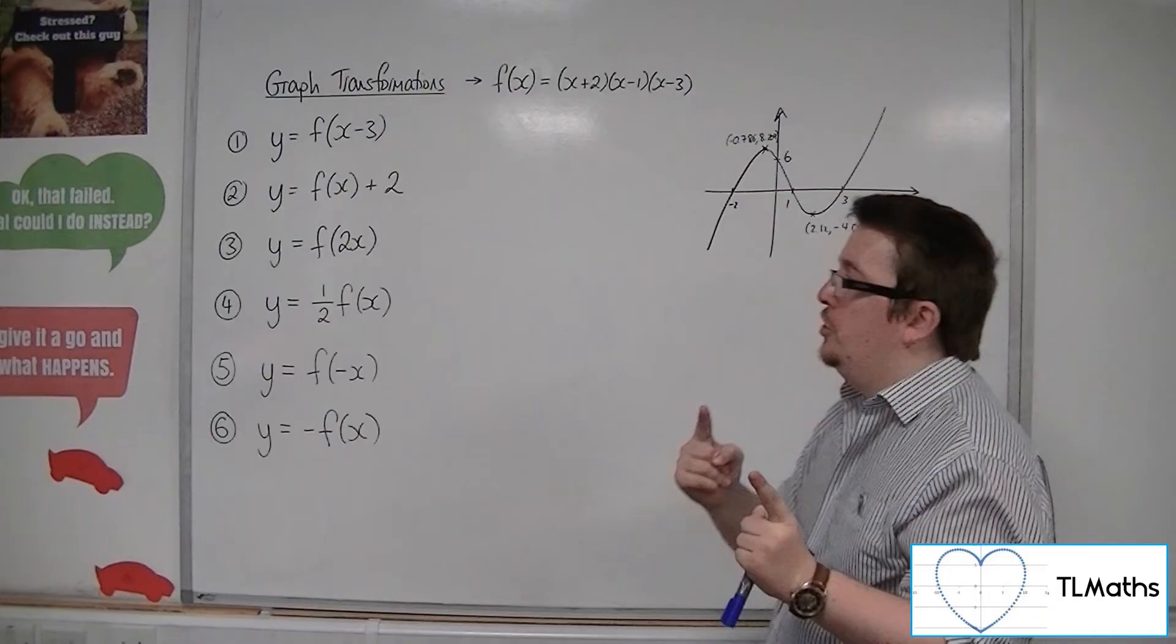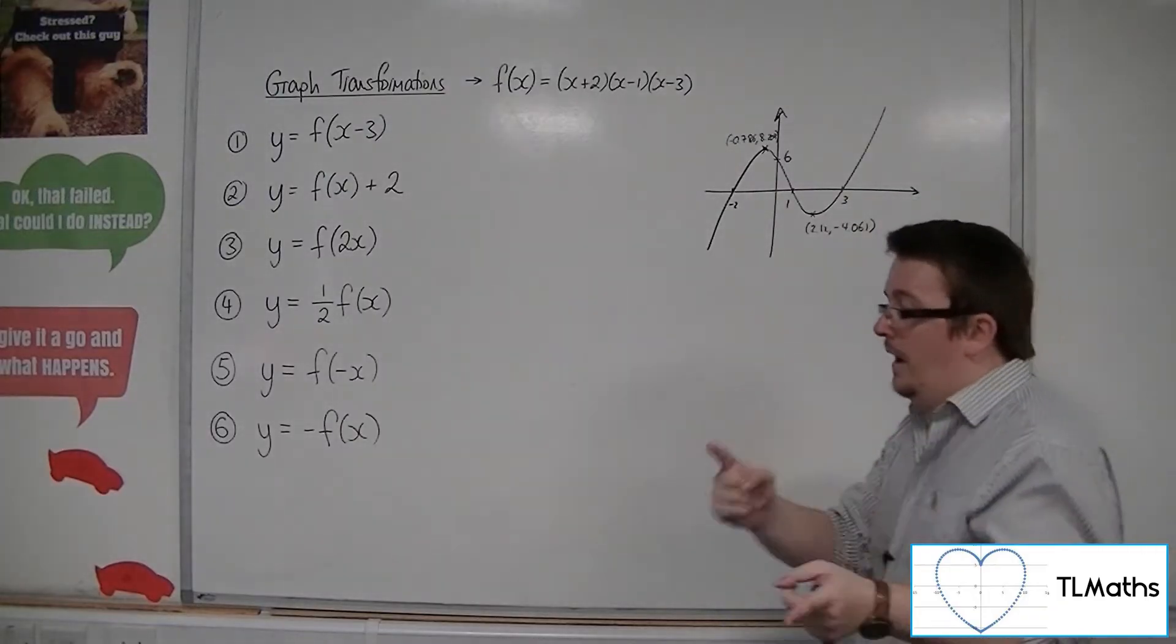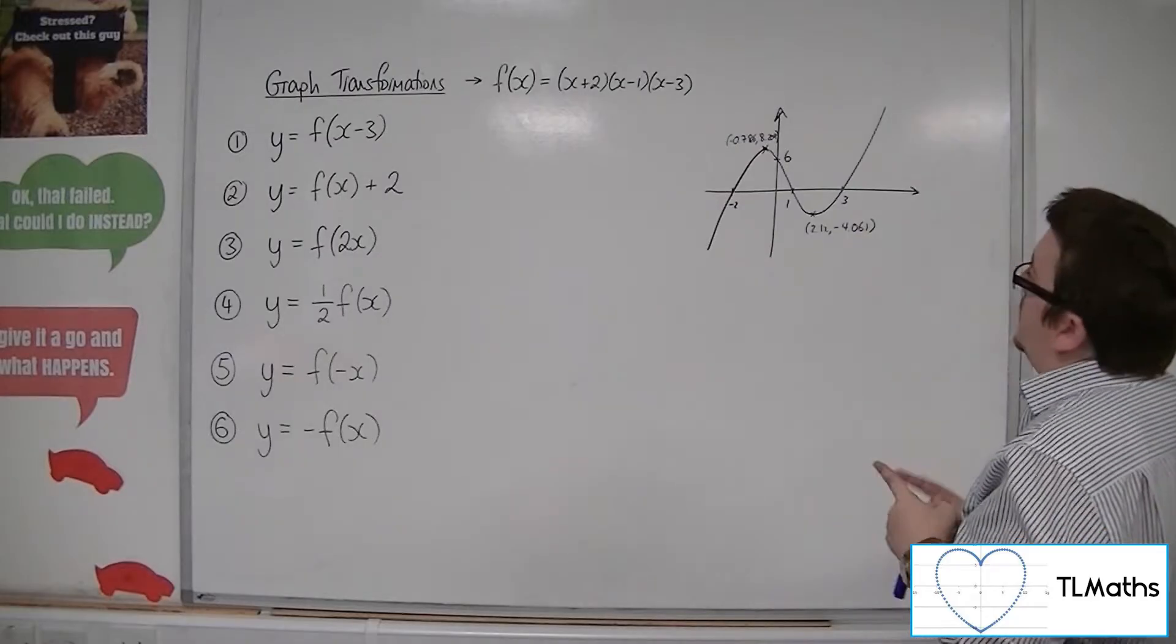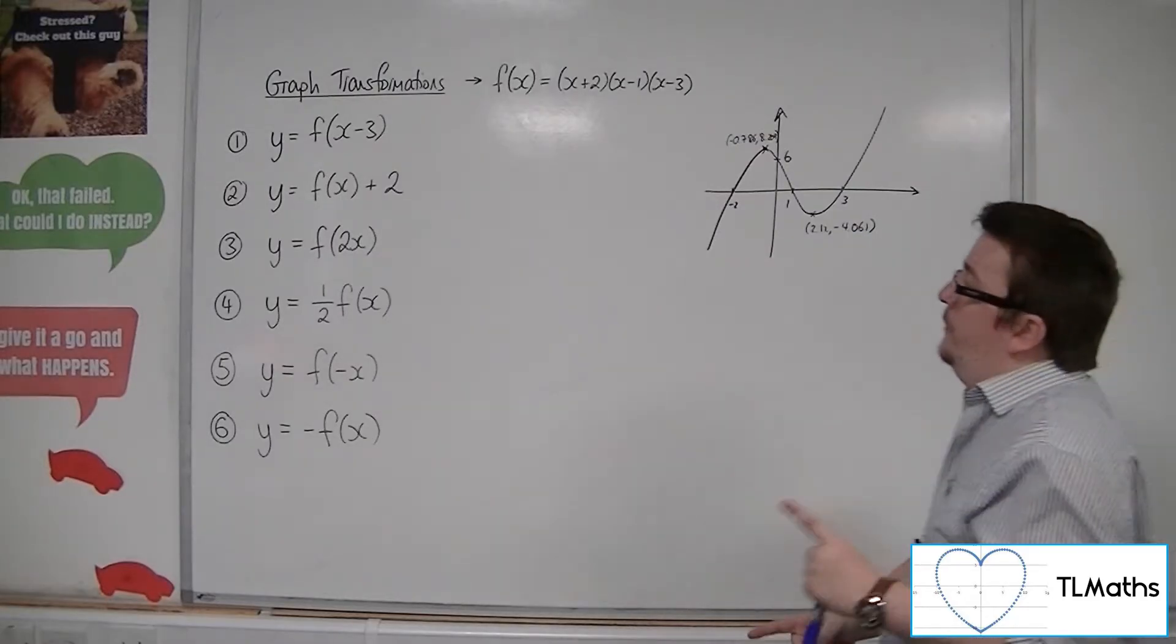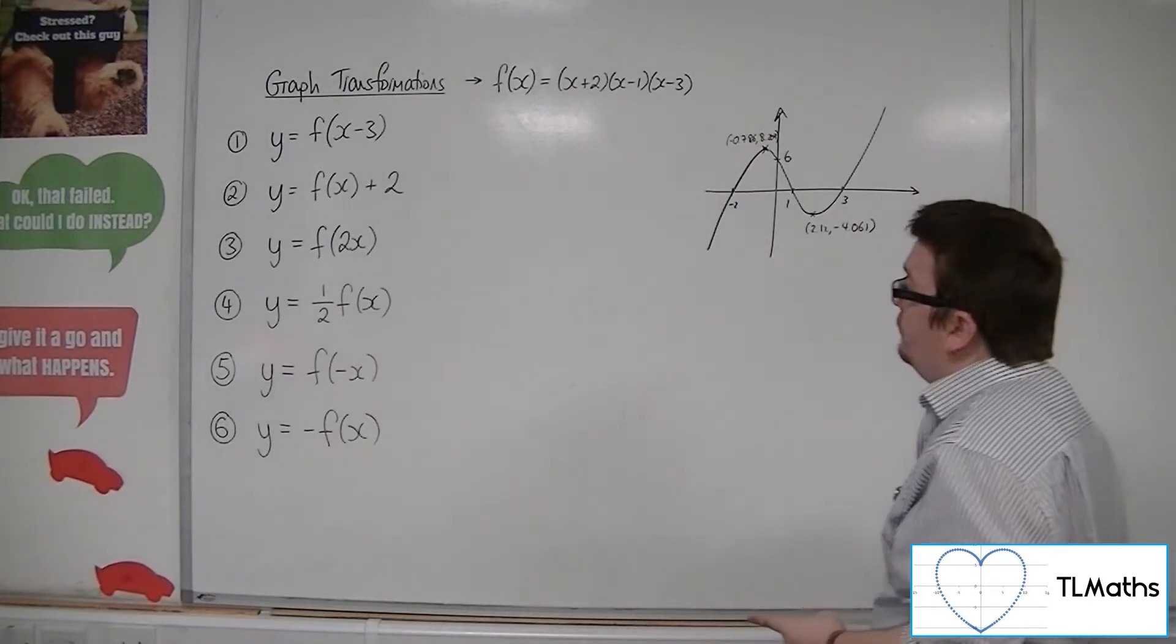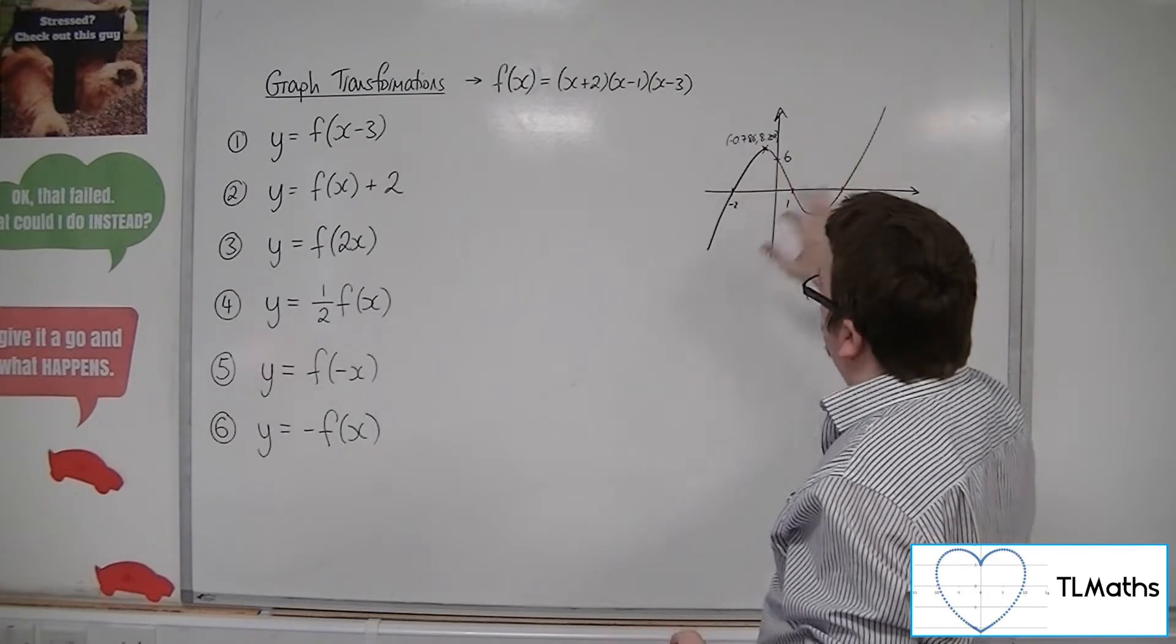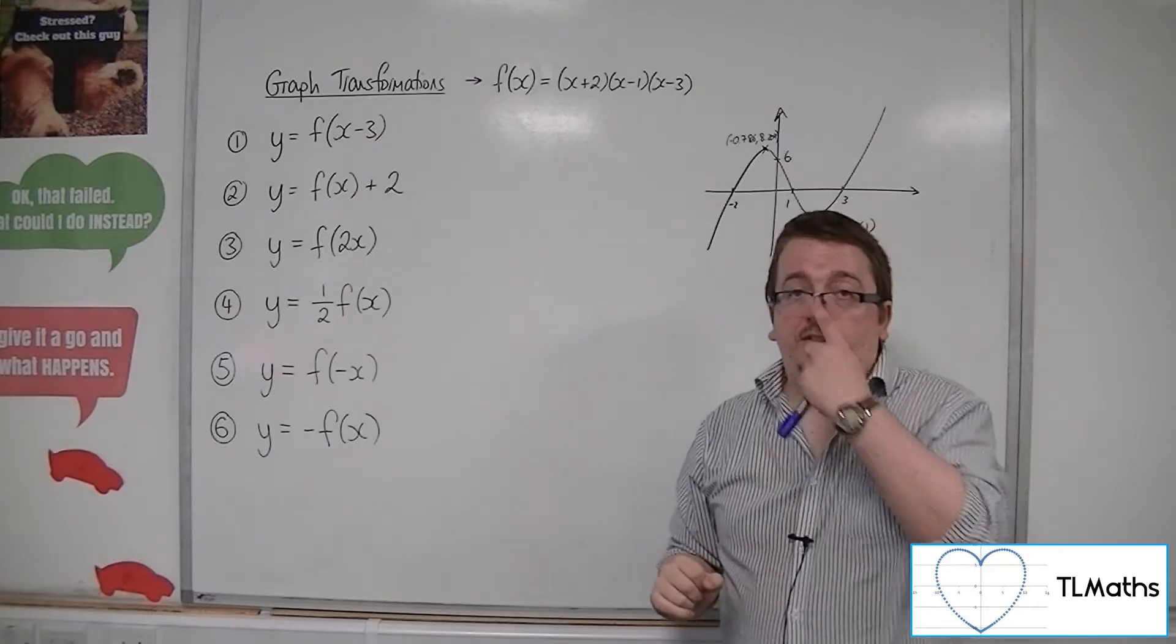Then you could substitute those back into the equation to get the y-coordinates. I'm not interested in that at this very juncture. I'm actually just interested in sketching what this curve is going to look like after these transformations and really looking at the points where the curve is crossing the x and y axis, the coordinate axes.